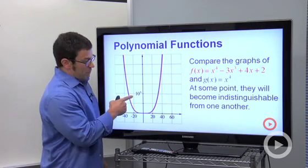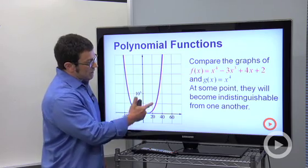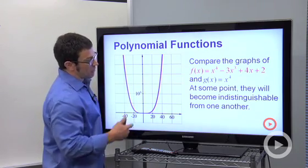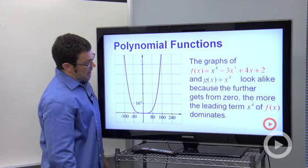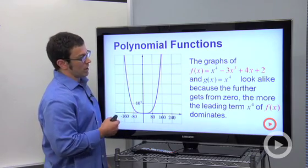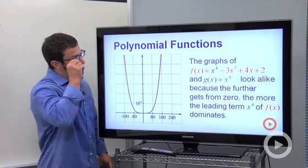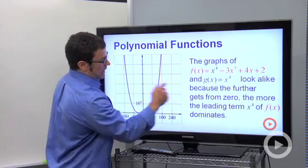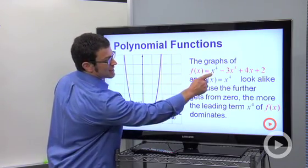They're so close that they are almost indistinguishable. And zooming out a little more, they become completely indistinguishable from one another. So this tells us that the determining factor in the end behavior of a polynomial function is the leading term.